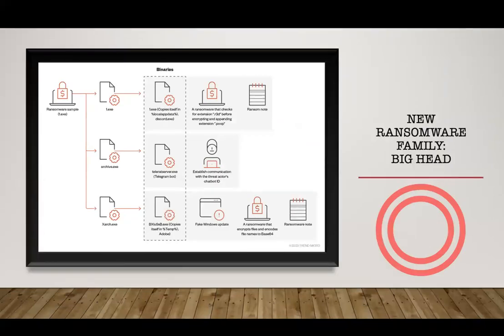There is a new ransomware family I'd like to mention: BigHead. The BigHead ransomware family and its variants emerged in May, with at least two variants documented. Upon closer examination, our research team discovered that both variants shared a common contact email in their ransom notes, leading us to suspect they originate from the same malware developer. When you analyze the details, finding shared indicators like an email lets researchers identify that two apparently different ransomware strains are actually from the same threat actor.